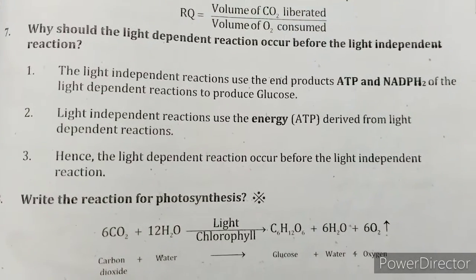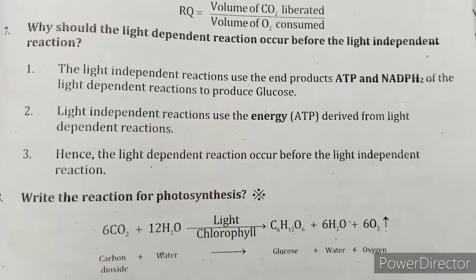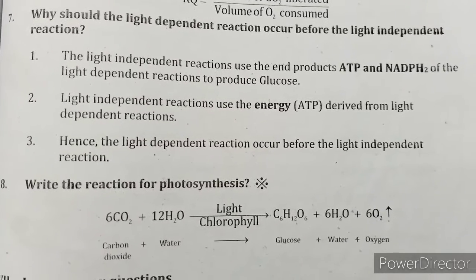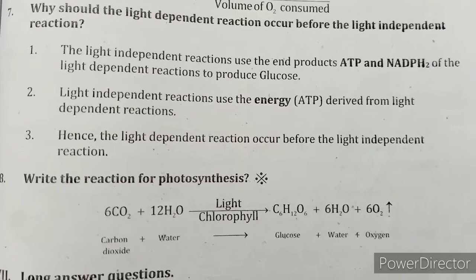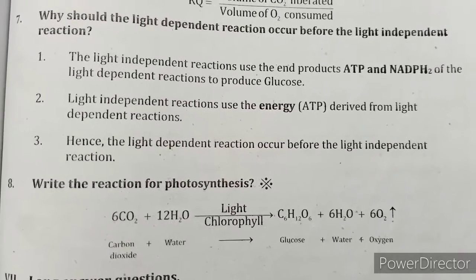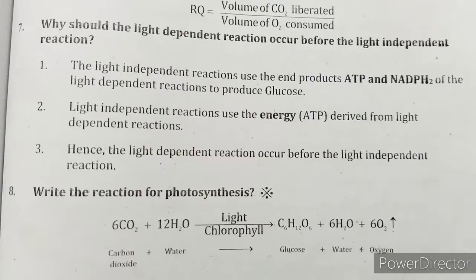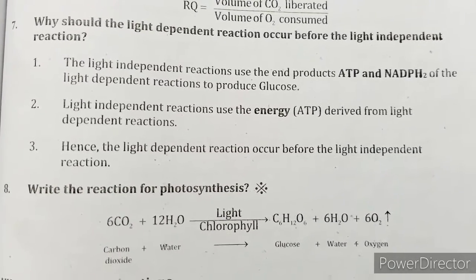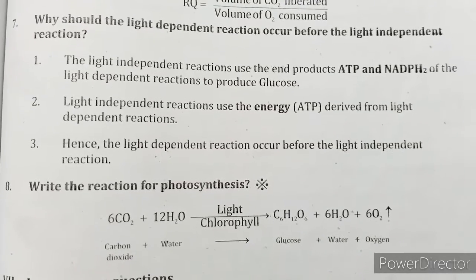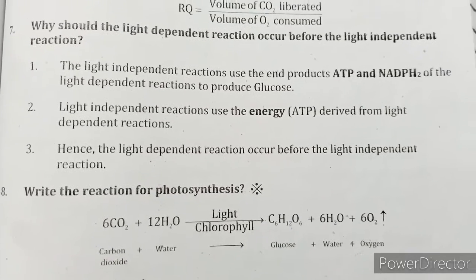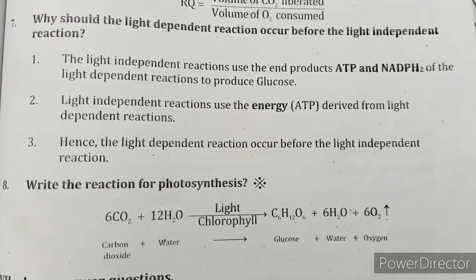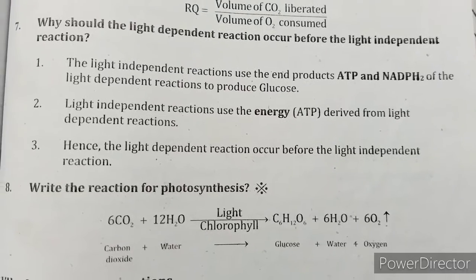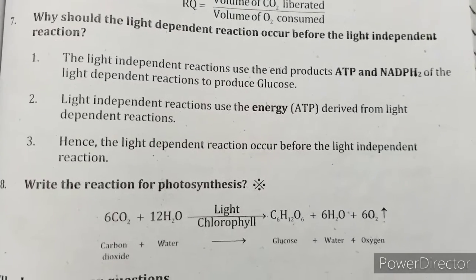Why should the light-dependent reaction occur before the light-independent reaction? The light-independent reaction uses the end products ATP and NADPH2 of the light-dependent reaction to produce glucose. Light-independent reactions use the energy ATP derived from the light-dependent reaction. Hence, the light-dependent reaction must occur before the light-independent reaction.